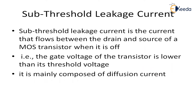What is sub-threshold leakage current? It is the current flowing between your drain and source when your MOS transistor is off. When your transistor is in off condition there will be a leakage current, because there is a channel formed between your source and drain. There will be a sub-threshold leakage current even when your transistor is turned off, because an inversion layer is already present between source and drain. Even though I made my device off, there is still a channel present, so current still flows — contributing to power dissipation. This current is the sub-threshold leakage current; it occurs when the gate voltage is lower than the threshold voltage, and it is mainly composed of diffusion current.